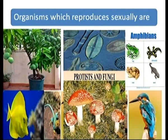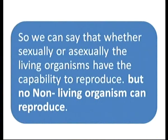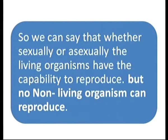Examples of organisms that reproduce sexually include: higher plants, fishes, reptiles, protists, fungi, amphibians, and birds. Whether sexually or asexually, living organisms have the capability to reproduce, while no non-living organism can reproduce.